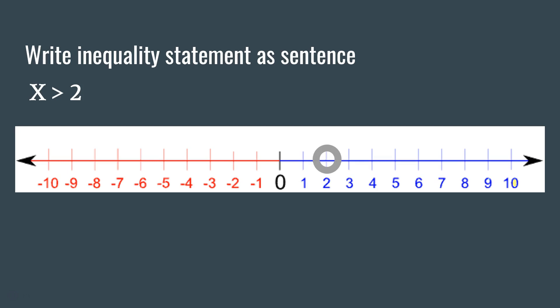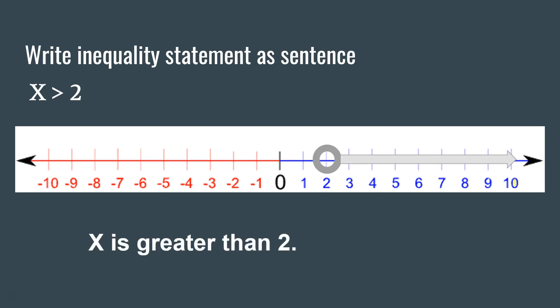Here we have the inequality x is greater than 2. Starting at 2, notice that there is an open circle at 2 because the point 2 is not part of the inequality — it is not included in the region we want to represent. We are indicating all values on the number line that are greater than 2, so 2 is not included in the solution set.